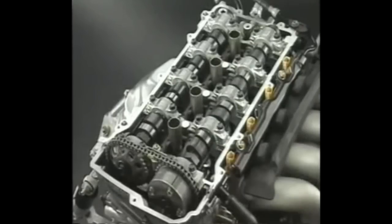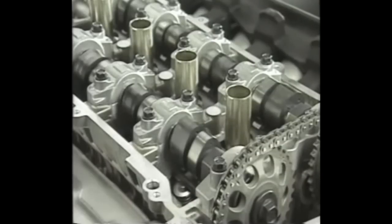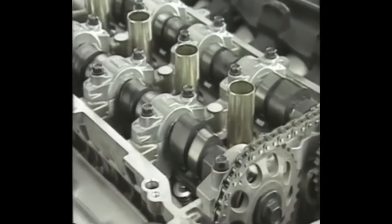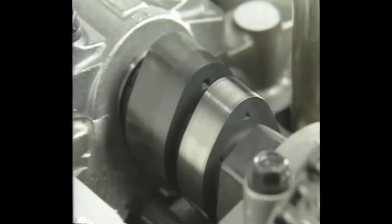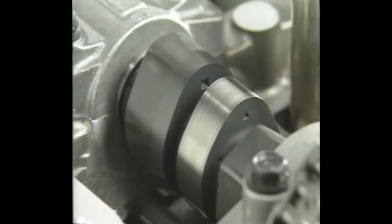Now, let's observe how the amount of valve lift is changed by the VVT-L-I. Two types of cams, one for low to medium speed and the other for the high-speed range, are placed next to each other on the camshaft of the VVT-L-I system.